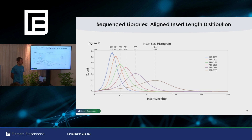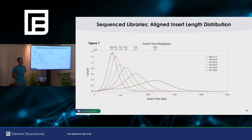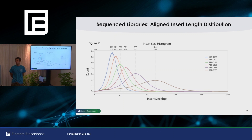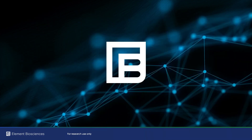Question about how dialable the sequencer is — for example, 250x50 or 100x200. We sell a 150 cycle or 300 cycle kit and you can split cycles any way you want. Interestingly, on the Twist exome data we actually got slightly better results doing 100 plus 50 instead of 2x75. There are cases where asymmetric read lengths can have benefit. Thank you everyone for coming and enjoy the rest of the conference.